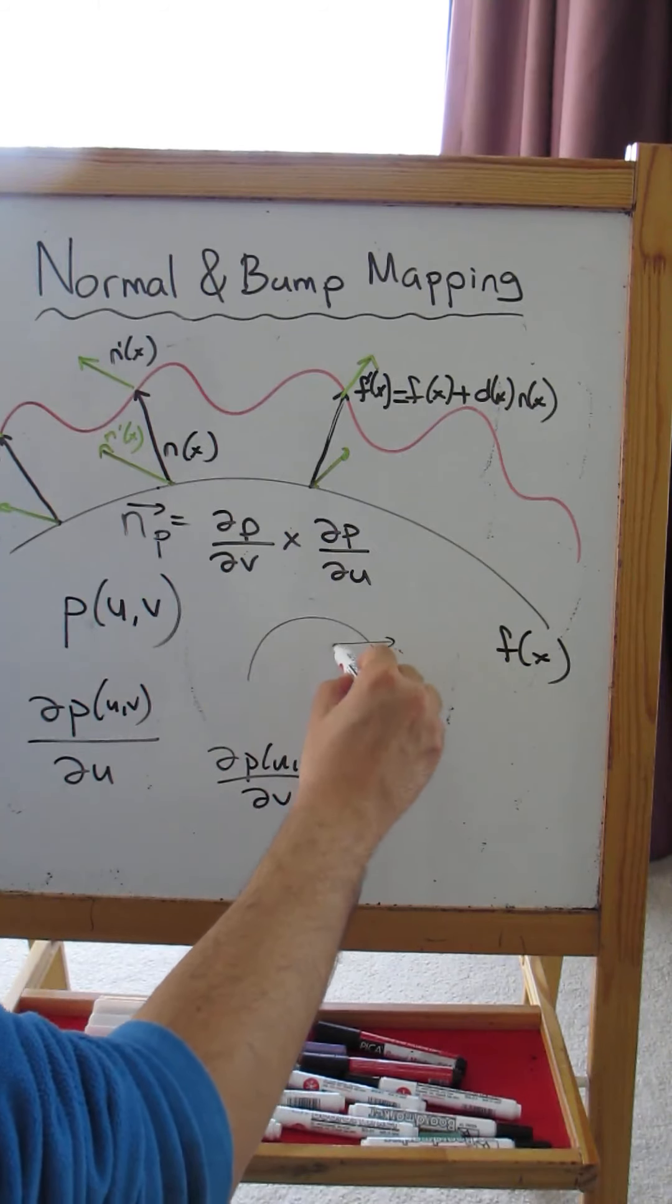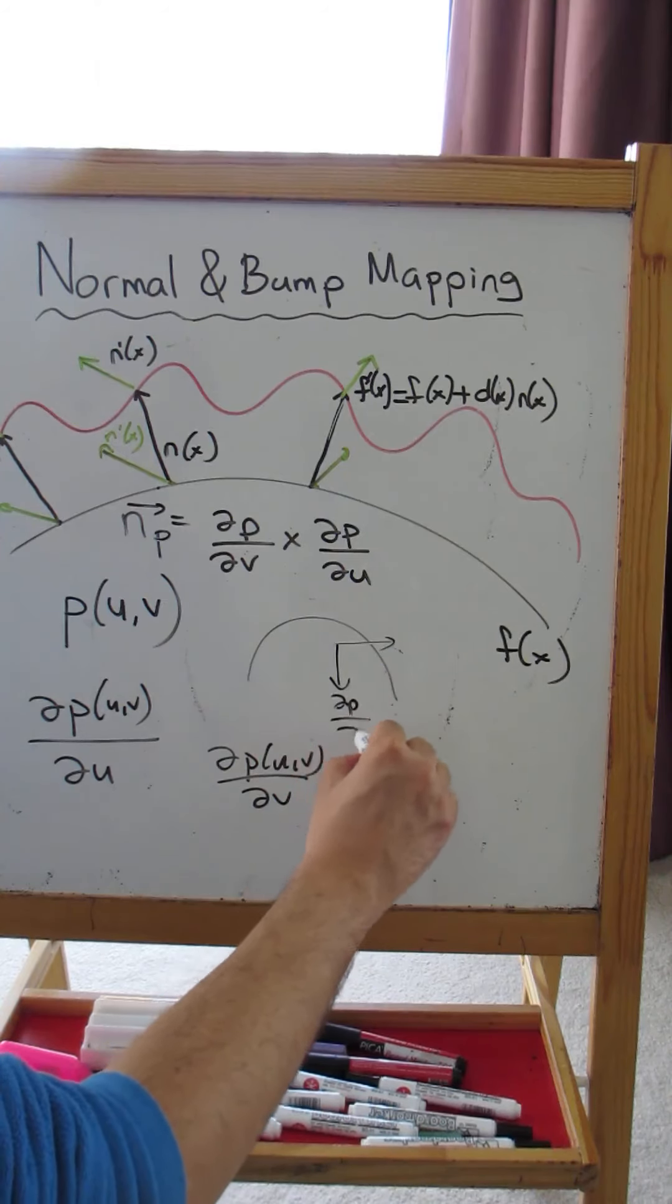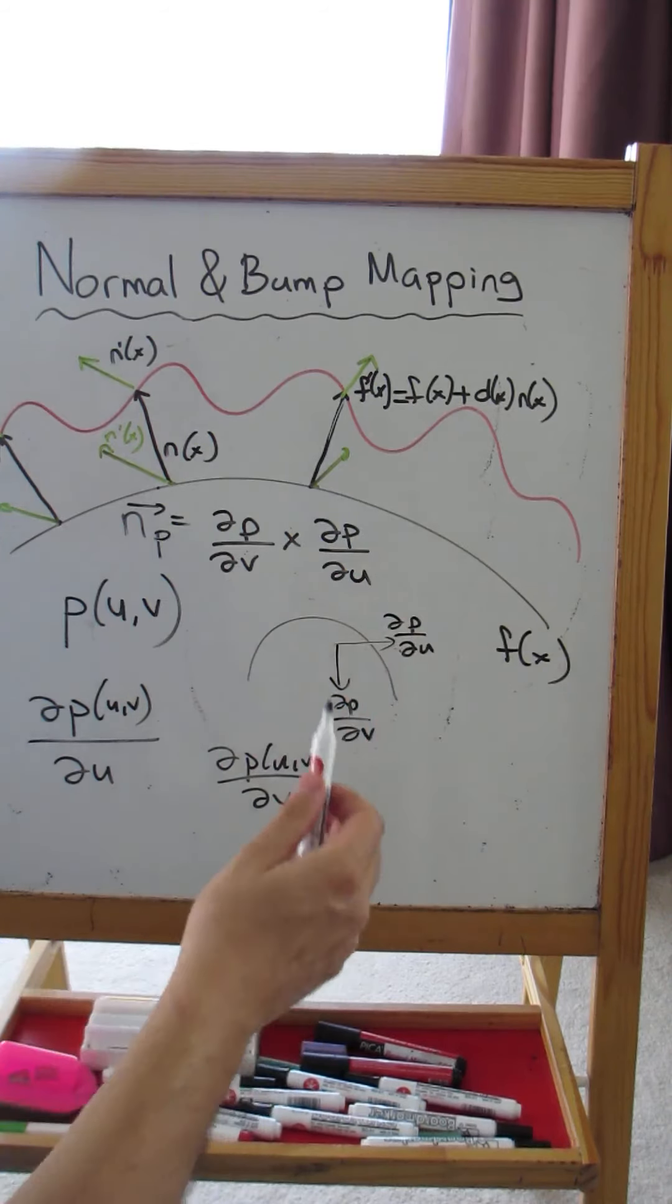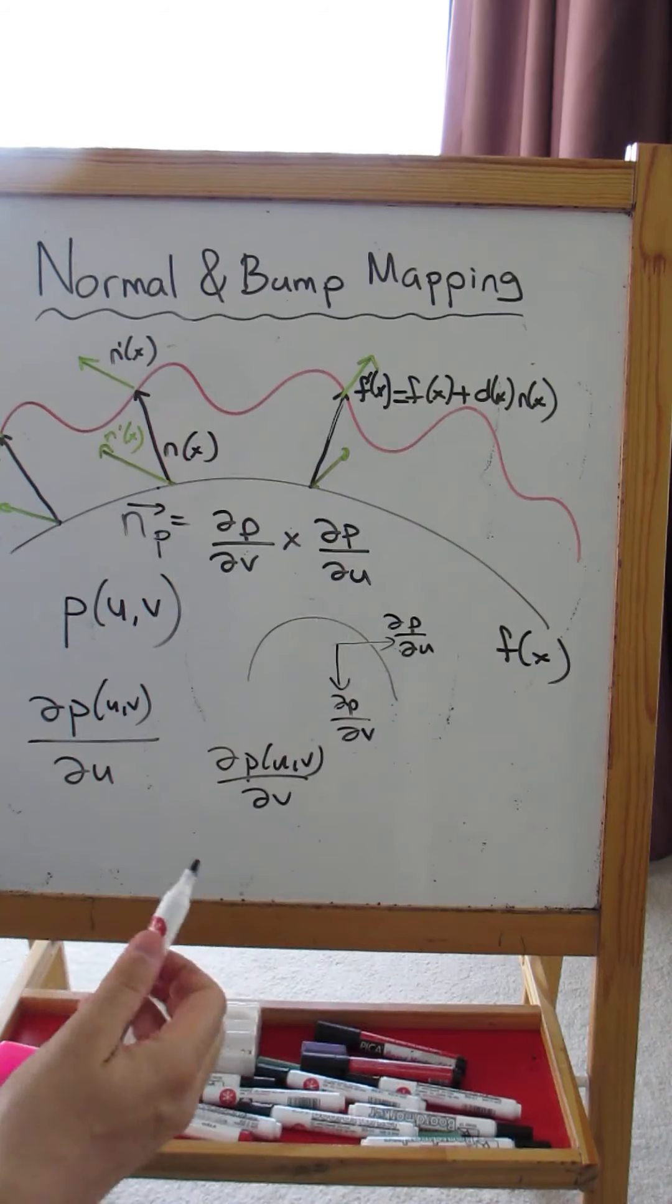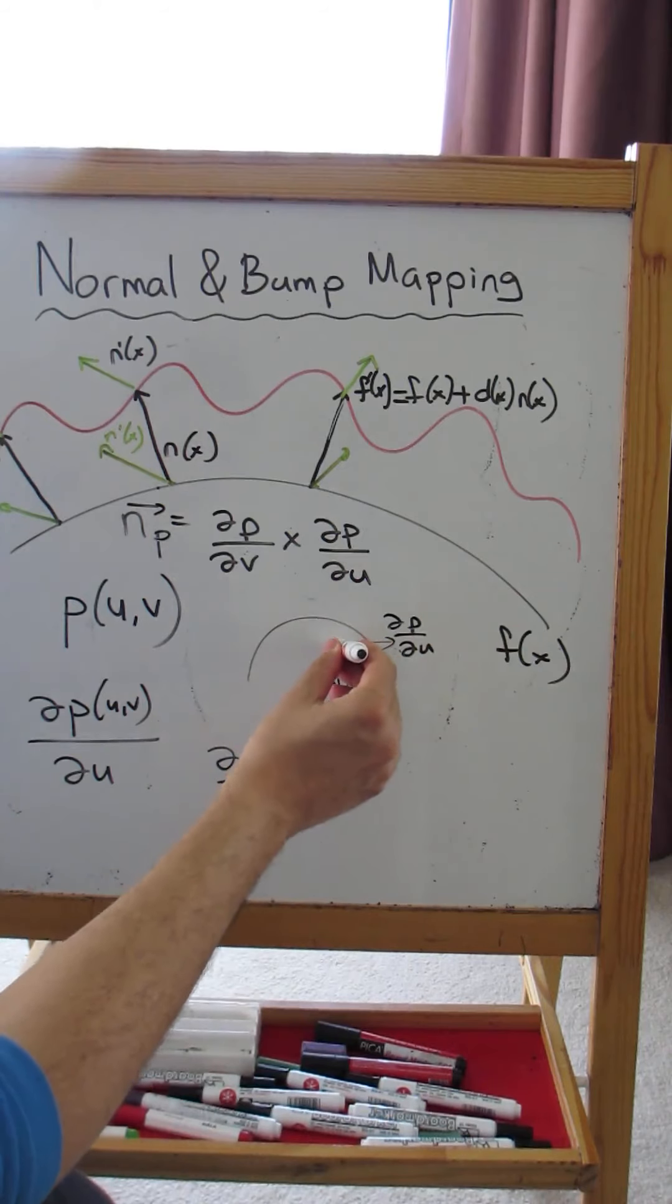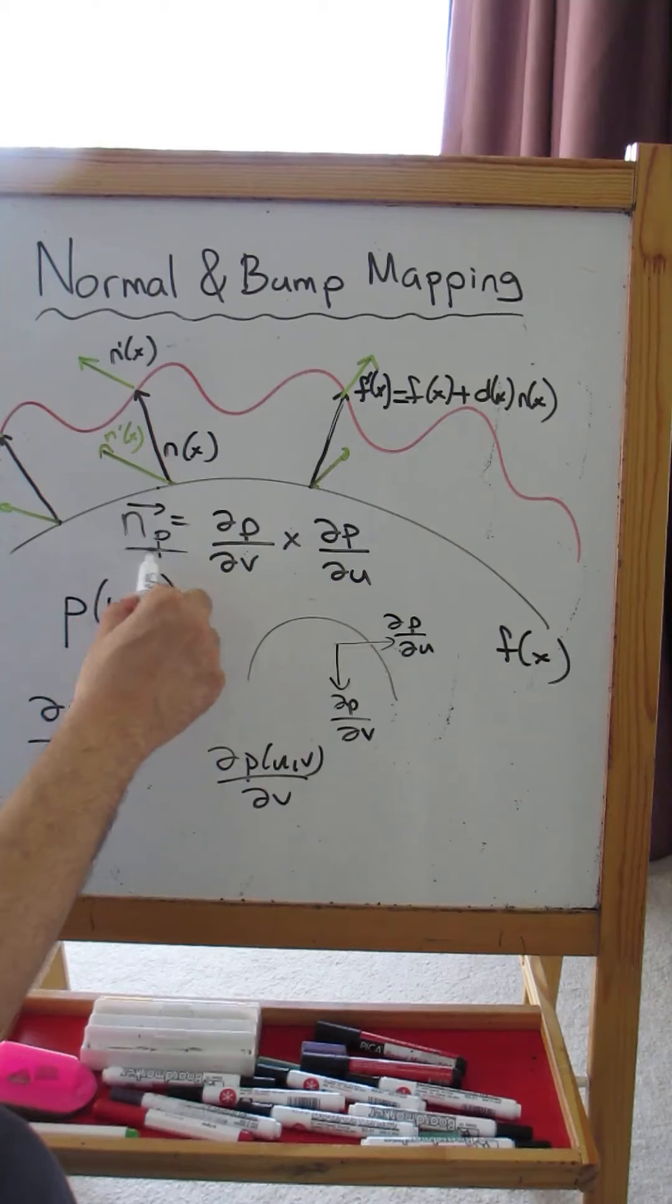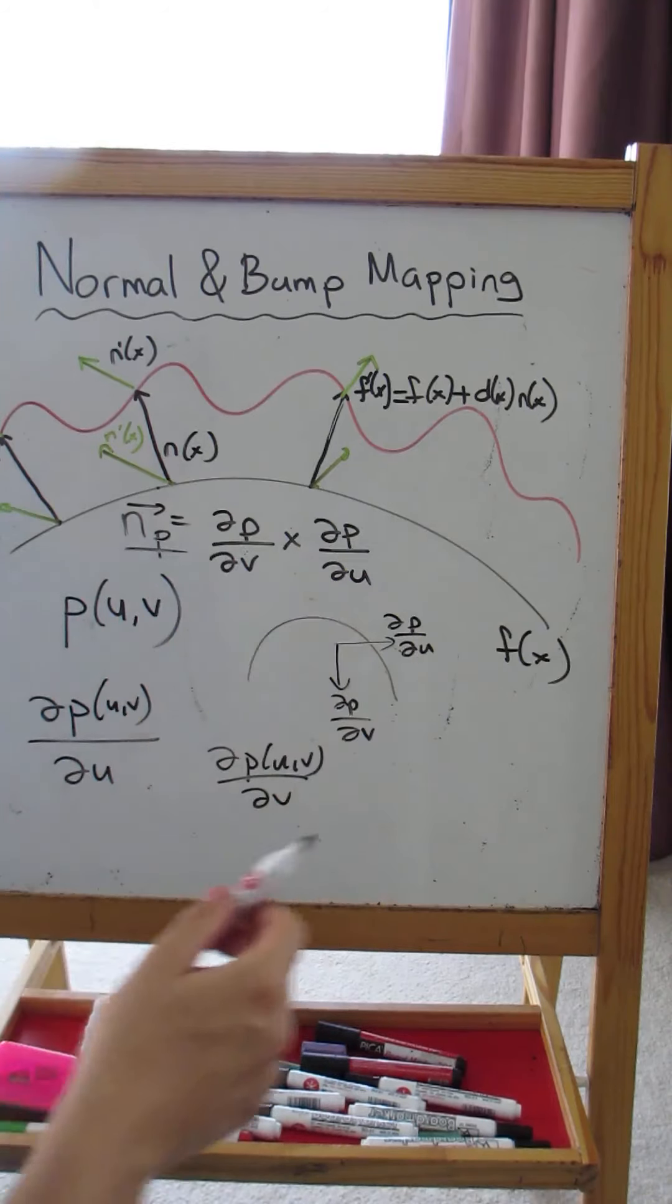Now one tangent vector is like that, the other one is like this. So imagine this is dP/dv and this is dP/du. Their cross product defines a vector which is perpendicular to both, which means it's perpendicular to the tangent plane. So their cross product gives us a vector. Here I have written it as nP, defined as dP/dv cross dP/du.